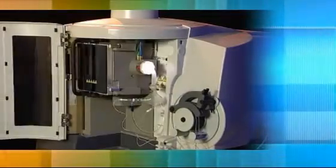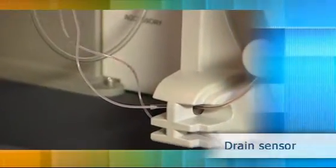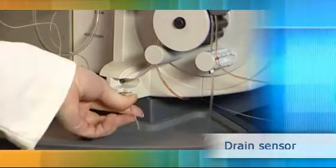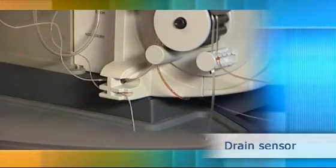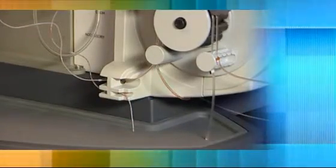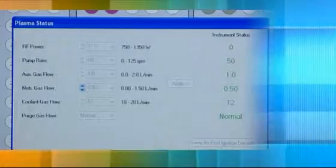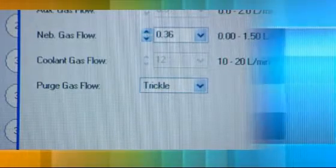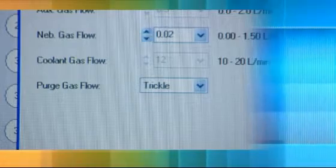The ICAP 6000 series uniquely features an optical drain sensor that monitors the flow of waste liquid from the spray chamber. If waste is not properly drained away, the sensor automatically stops analysis and shuts the instrument down. This saves valuable gas and samples and eliminates potential damage from spilled solvent or acidic solutions.